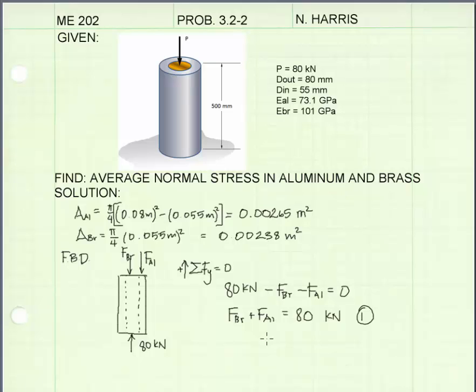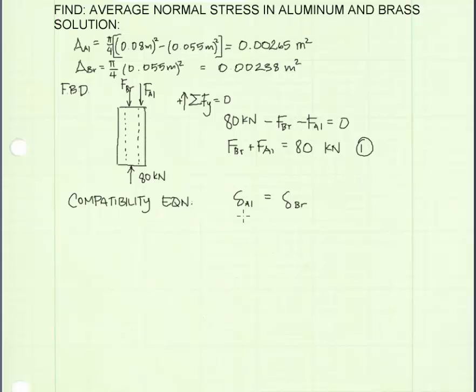We need to find another equation, and that equation is going to be our compatibility equation. When we put this load on the cylinder, it is going to deflect. The cylinder is going to get shorter. Because the aluminum pipe is bonded to the brass rod, the deflection in the aluminum is equal to the deflection in the brass. That is essentially our equation of compatibility.